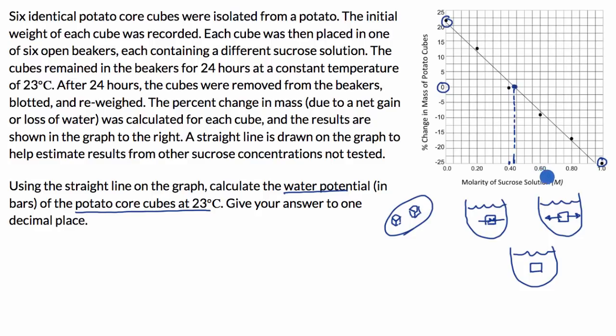And then we see that this line would say that there's a 0% change in mass. If this is 0.4 right over here, this is 0.5 right over here. So this is about a 0.44 molar sucrose solution. So if we can figure out the water potential of this 0.44 molar sucrose solution, well, that's also going to be the water potential of the potato cubes.